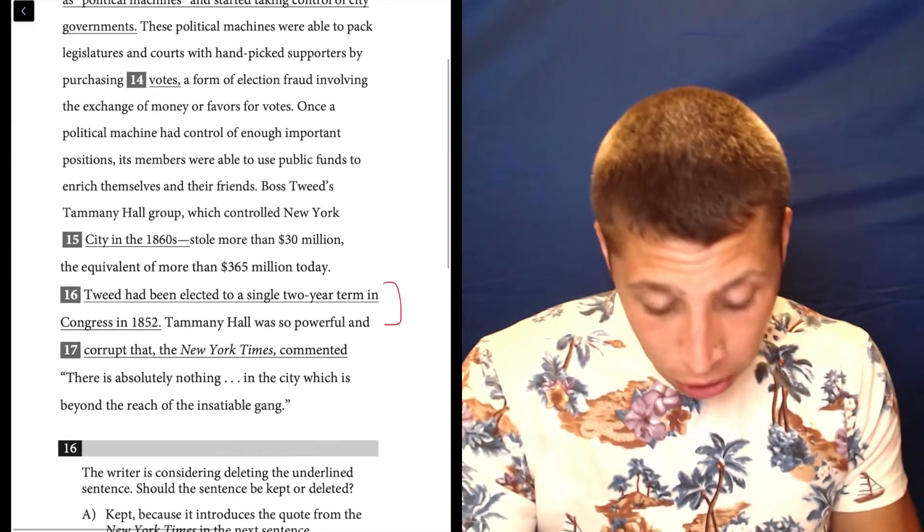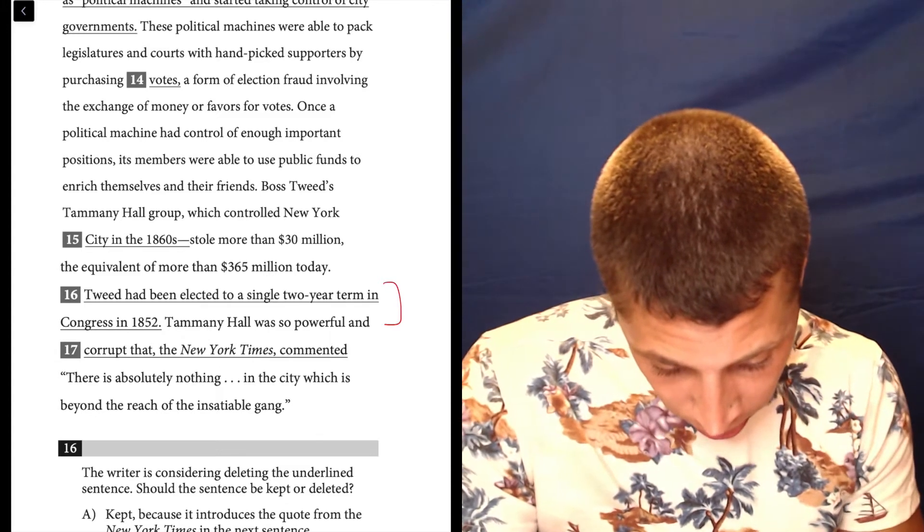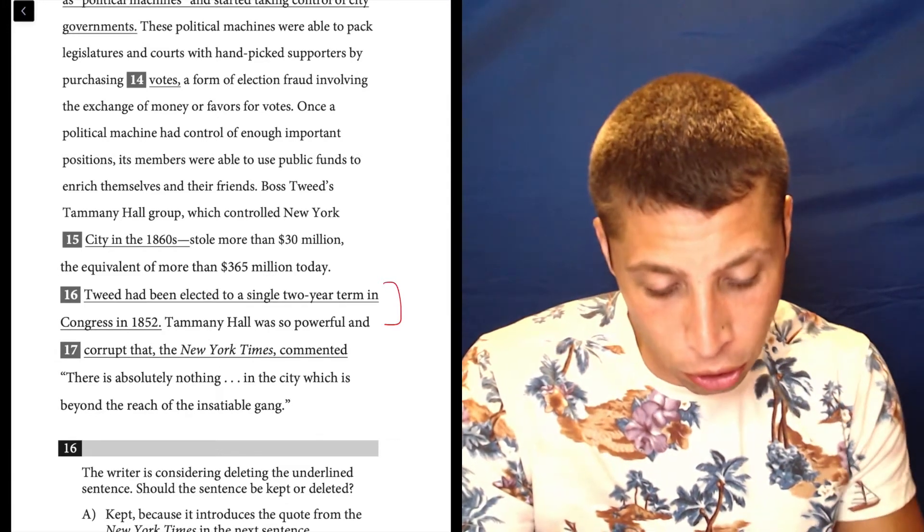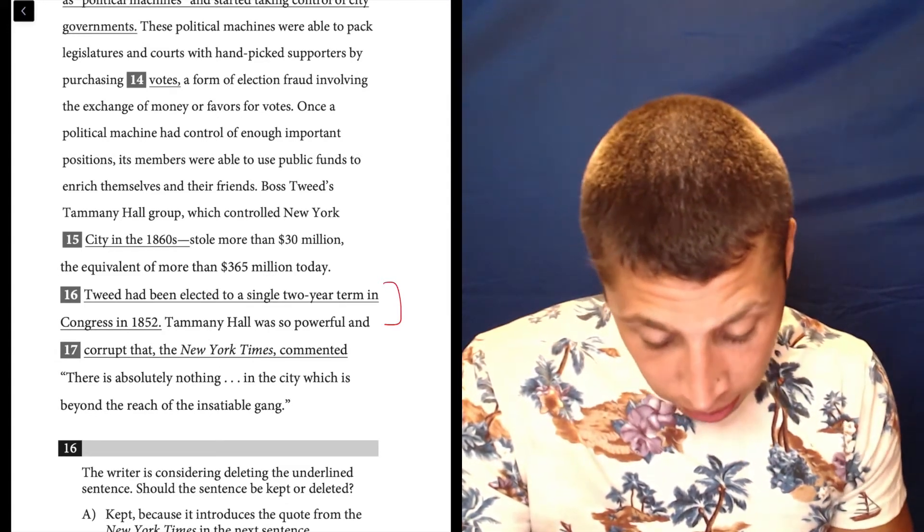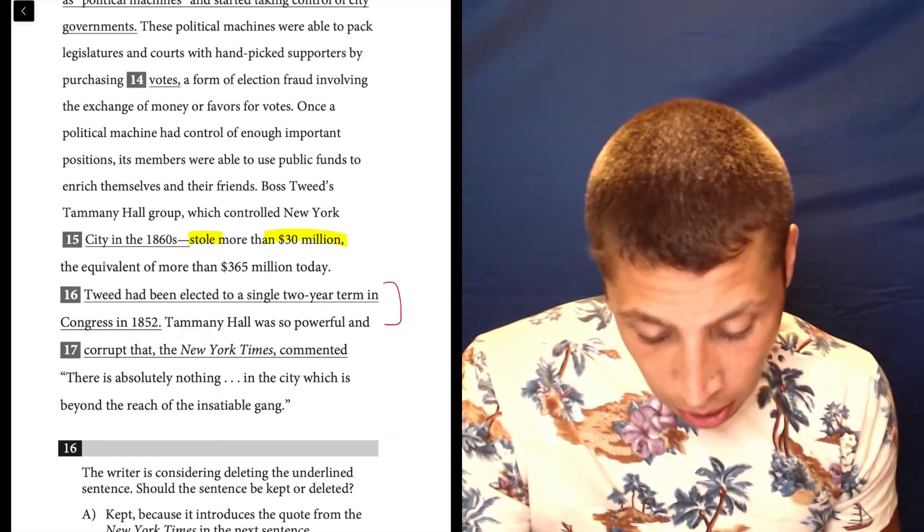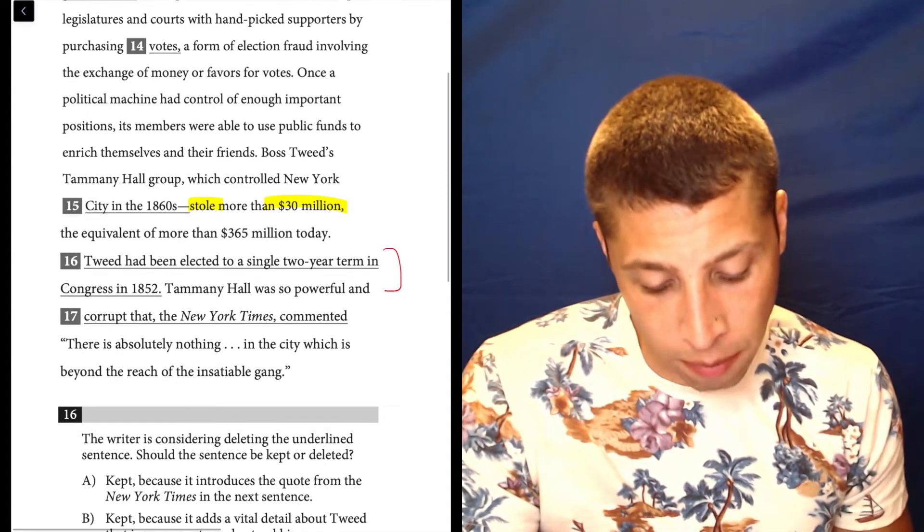We can look even just at those two sentences, right? So the sentence before starts here: Boss Tweed's Tammany Hall Group, which controlled New York City in the 1860s, stole more than $30 million, the equivalent of more than $365 million today.